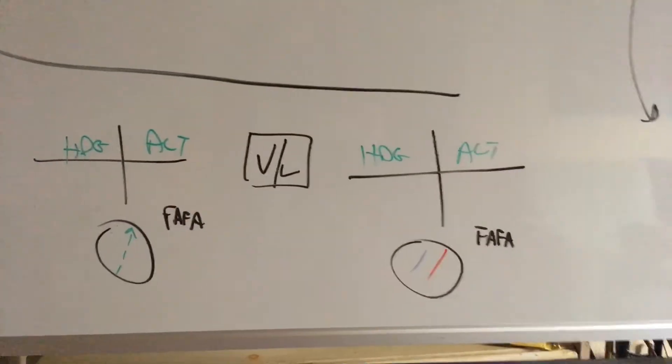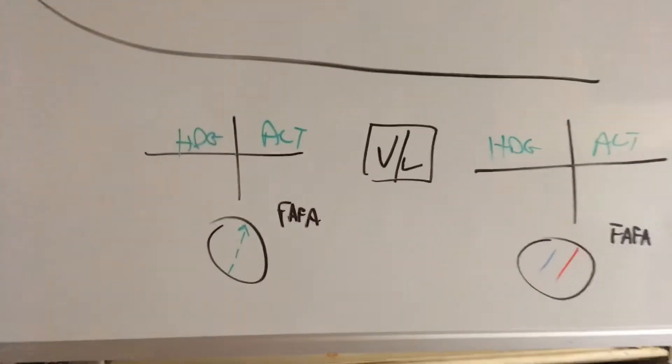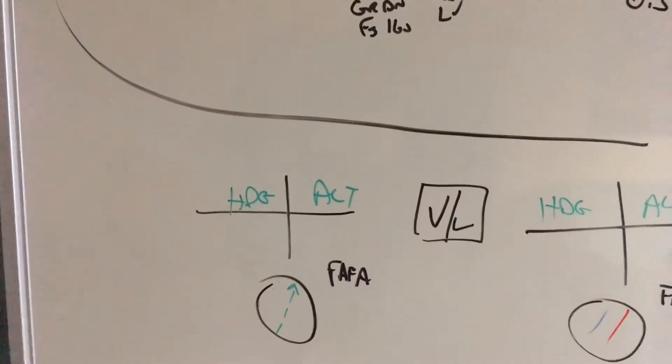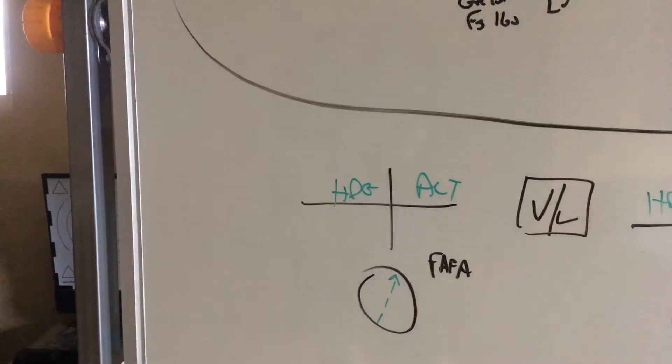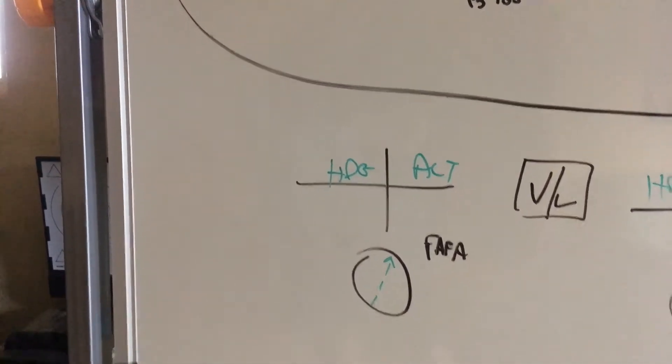At any point in time you can press VL. It's not going to give us any advantage like it did last time, so might as well have it up. So we select VL and we have heading altitude both in green and we have green needles.